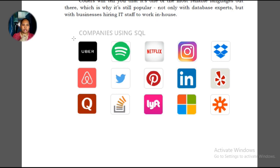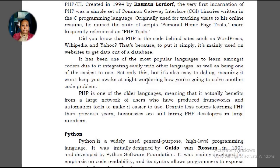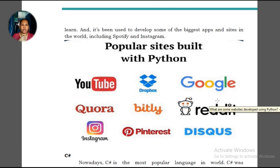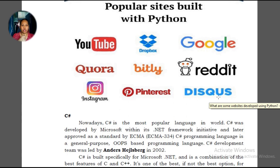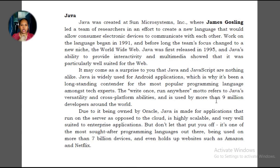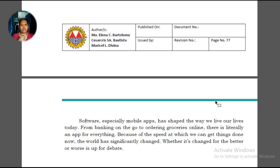PHP is also related to database handling in software. Python is now more widely known because it is reportedly easier to learn and use — various websites use Python. We also have C-sharp and Java. Java is more focused on mobile and games; many games are made using Java. These are the computer programming languages most commonly used today.